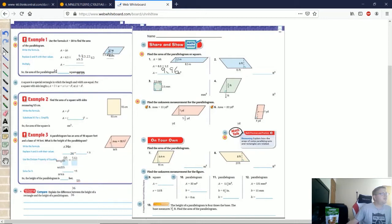Number 3, 2.5 times 2.5 will give us our answer. That should give us 6.25 mm squared.